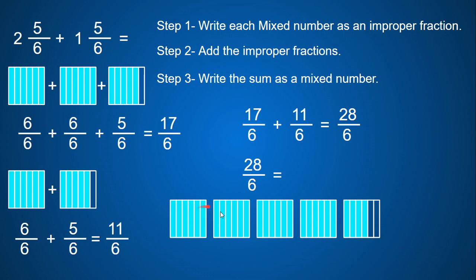So I have one whole, two wholes, three wholes, four wholes, and four sixths. So twenty-eight sixths becomes four and four sixths.